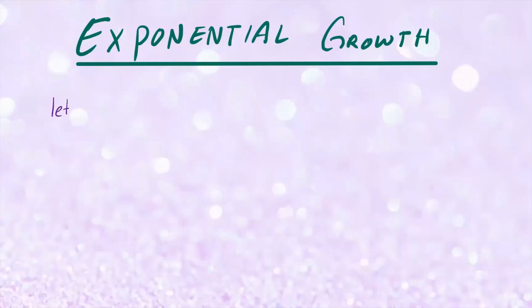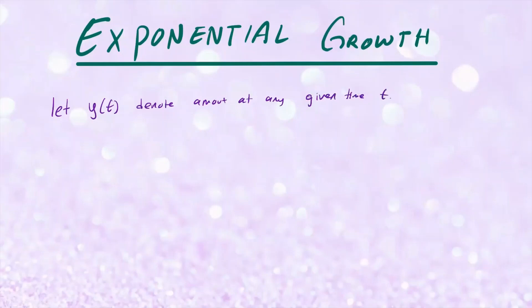We're going to start off by letting y of t denote the amount at any given time t. We want to model the differential equation dy/dt, which is the rate at which the population or amount is changing at any given time t, and this is going to be proportional to its size. So k is the proportional factor and y is the size. We could put a negative in front of k if it's a decay problem, but since we're working with growth we're going to keep k positive.